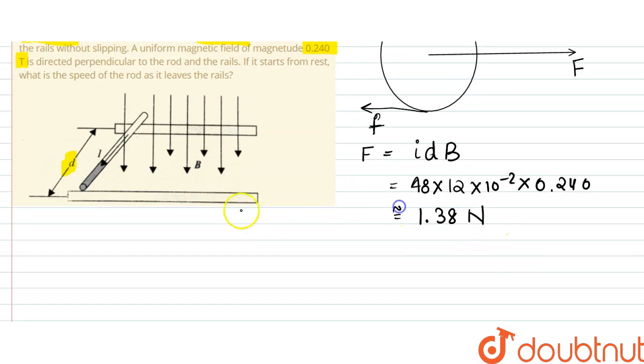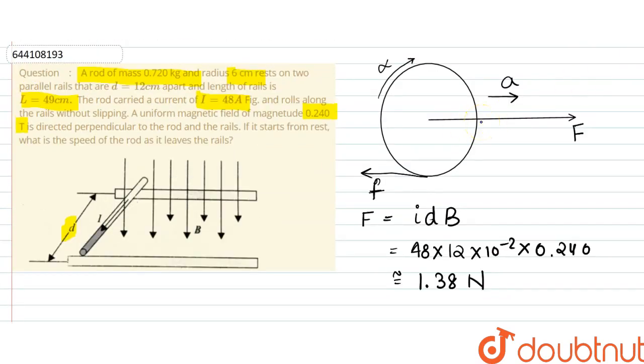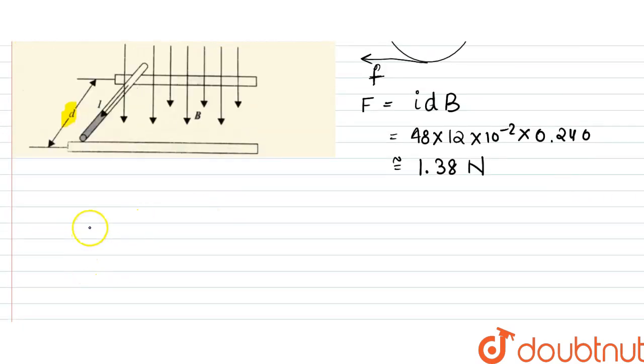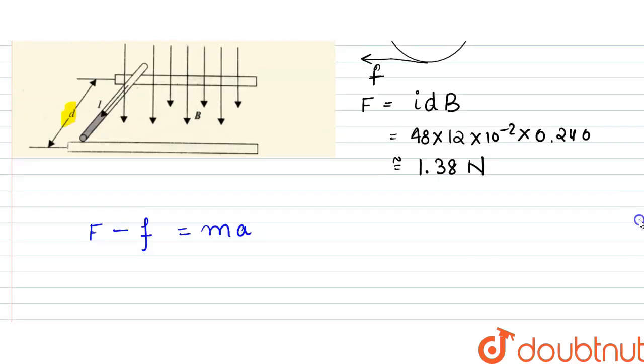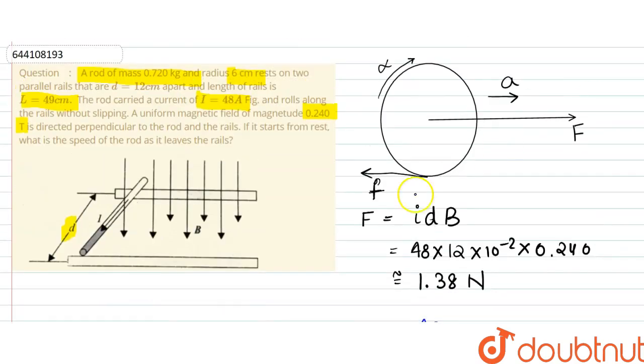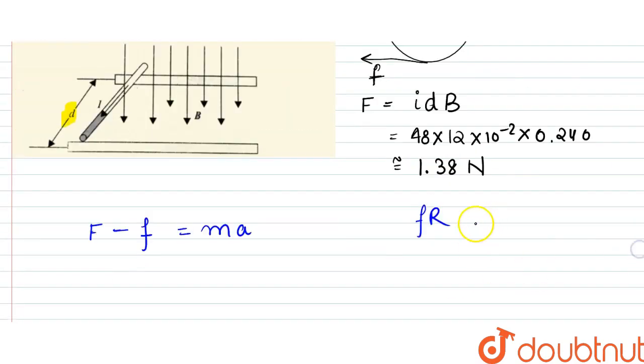According to the figure, F - f = ma, but there would be a torque acting as it is rotating. That torque would be f × r = I × α, where I is the moment of inertia and α is angular acceleration.